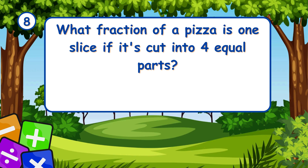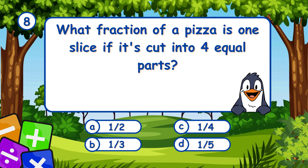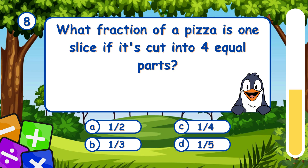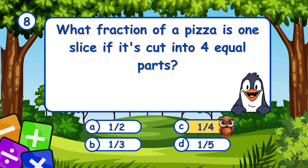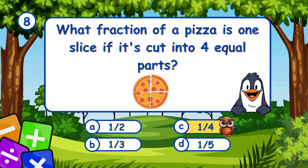What fraction of a pizza is 1 slice if it's cut into 4 equal parts? It's C, 1 quarter. A pizza cut into 4 parts has each slice as 1 quarter.